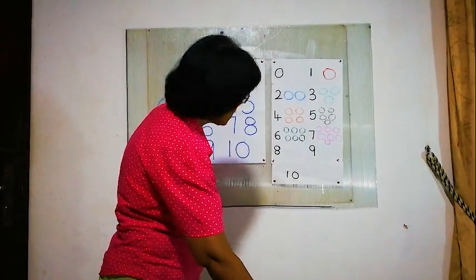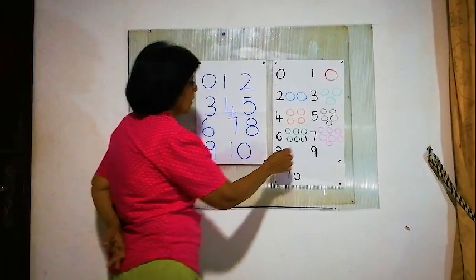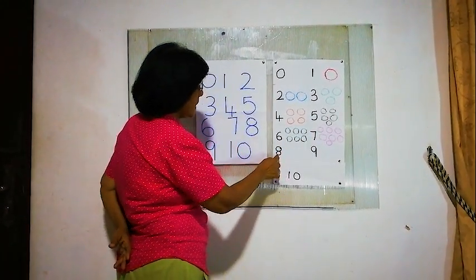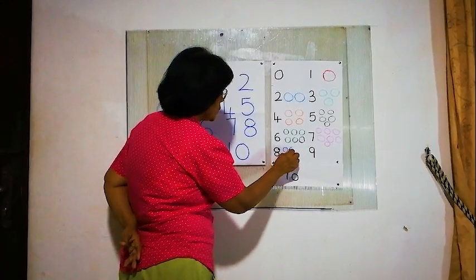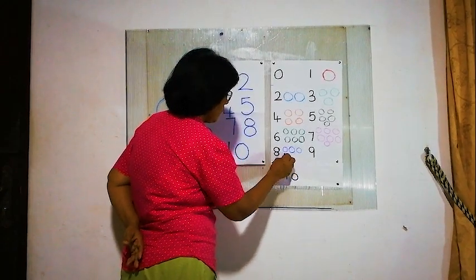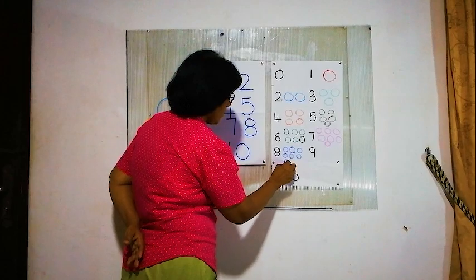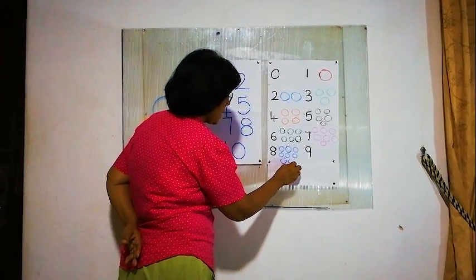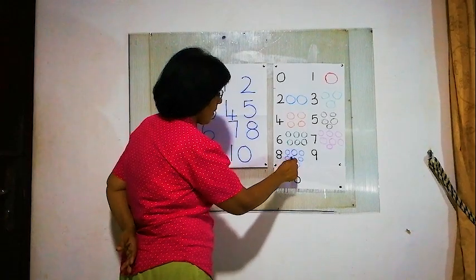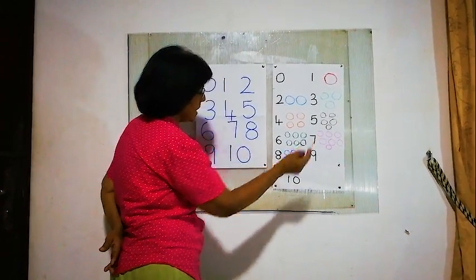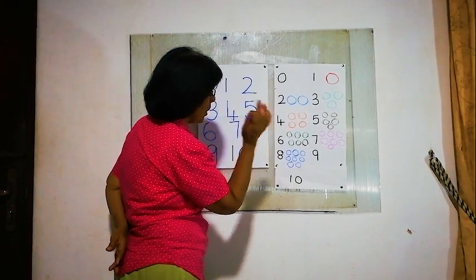Next one — number 8. After 7 is 8. We'll draw 1, 2, 3, 4, 5, 6, 7, 8. How many balls? 8 balls. For 8 — 8 balls. For 7 — 7 balls. For 6 — 6 balls.